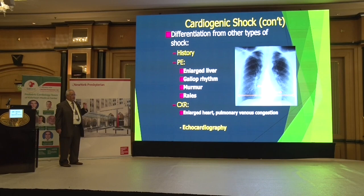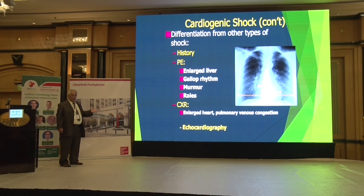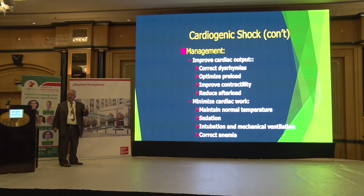You may hear murmurs and rales, especially in the lower lung fields. X-ray will show an enlarged heart and pulmonary venous congestion. Echocardiography is a must in such cases. When giving IV fluids in cardiogenic shock, we give 5 ml/kg and reassess, then another 5 ml/kg and reassess again.